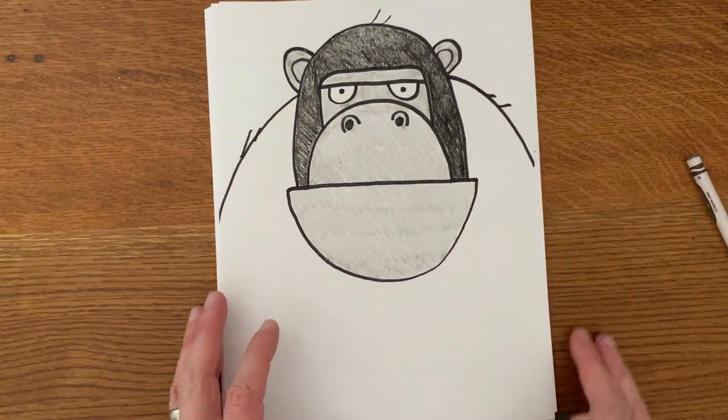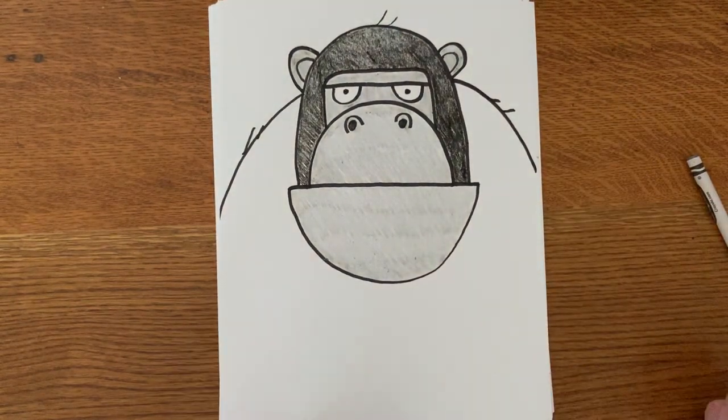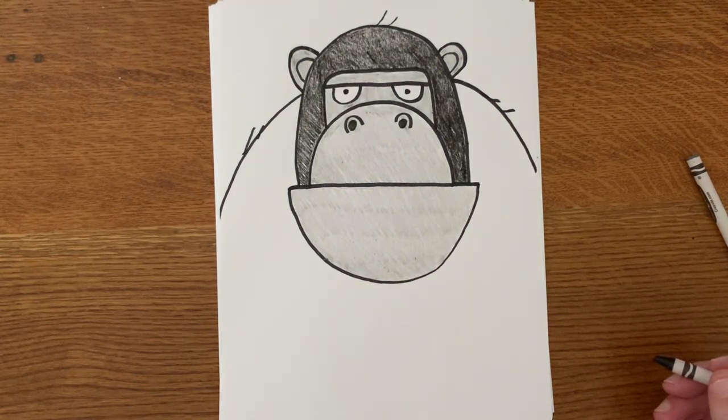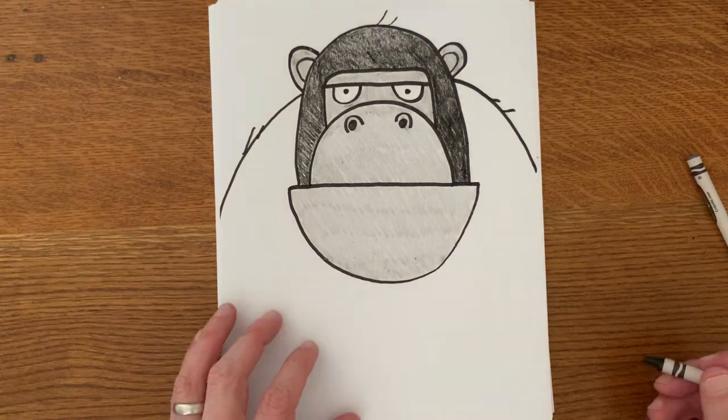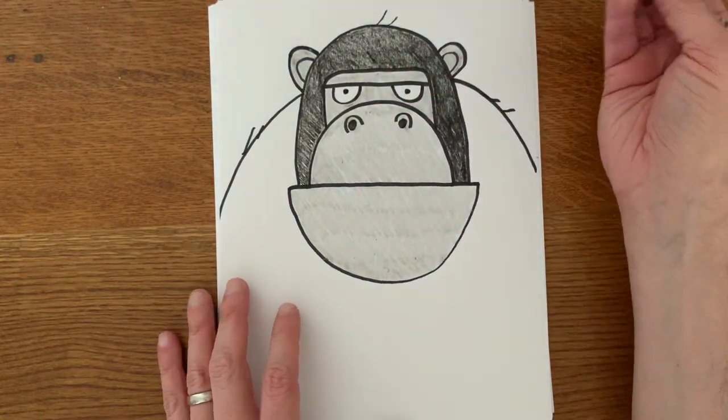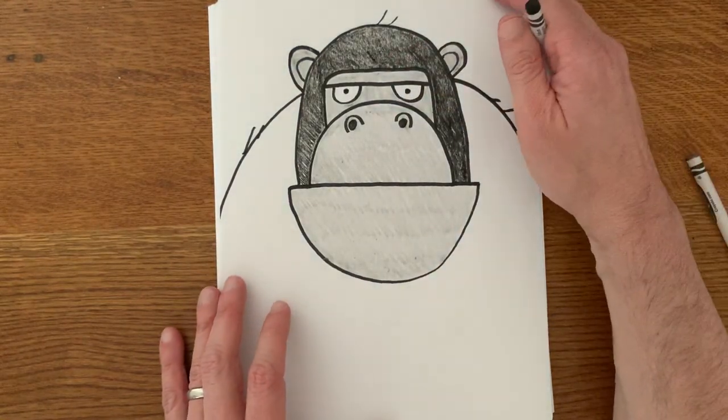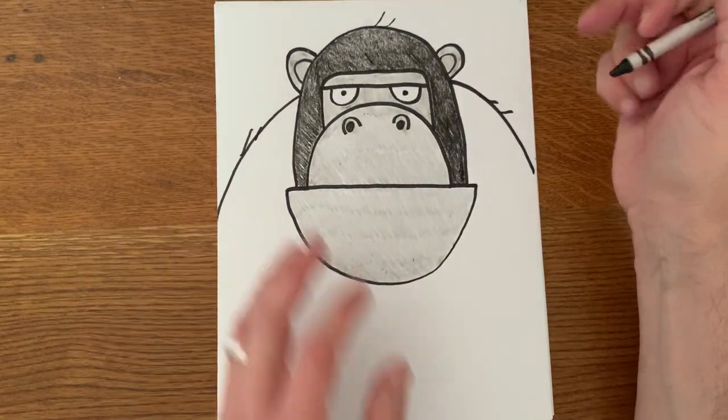All right, to do the body. Now the body is going to take up the rest of the page. So again, this is just going to be a lot of coloring, but this is where a lot of kids tend to get a little bit lazy because they just want to be finished or done. So remember, you're trying to create a piece of artwork that you can be proud of and that is going to look finished and complete.